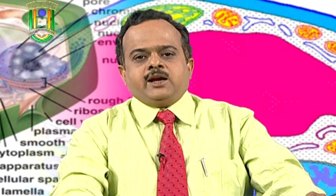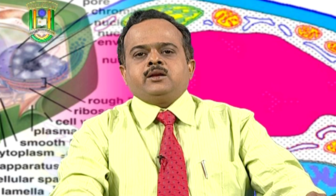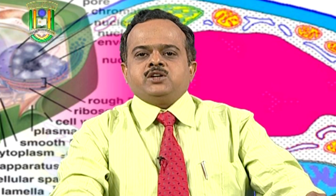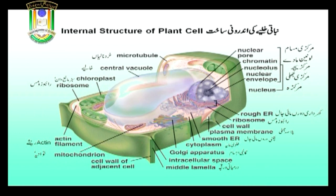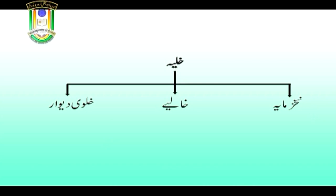اب آپ کو خلیے کی اندرونی ساخت کے بارے میں تفصیل سے ایک سلائیڈ بتانے جا رہا ہوں۔ اس سلائیڈ کے درمیان میں ایک بڑا سا خالیہ نظر آ رہا ہے جو تھیلی نما ساخت کی طرح ہے۔ نچلے جانب سبز مایہ دان پائے جا رہے ہیں اور دائیں جانب ایک کروی شکل کی ساخت ہے جس کو مرکزہ کہتے ہیں۔ ترسیمی خاکہ کے مطابق خلیے کے تین حصے ہیں: نقص مایہ، خالیہ اور خلوی دیوار۔